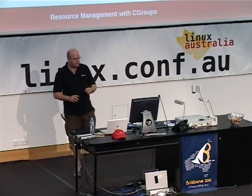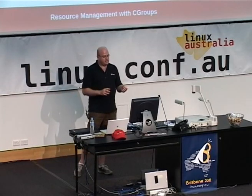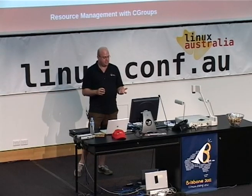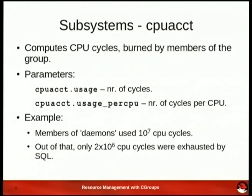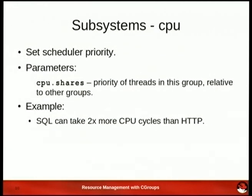Let's look at some of those subsystems in detail. With memory, you can limit the memory and also pull statistics back from the Cgroups hierarchy about the amount of memory currently being used. With CPU accounting, we can pull back the number of cycles being used, so you may be charging a department or a client for the number of cycles they're utilizing and bill accordingly. CPU shares is a weighting model — SQL with 1,000 shares and HTTPD with 500 shares. When there's resource contention, it will weight in favor of the SQL server, but it won't deny HTTPD CPU resources.